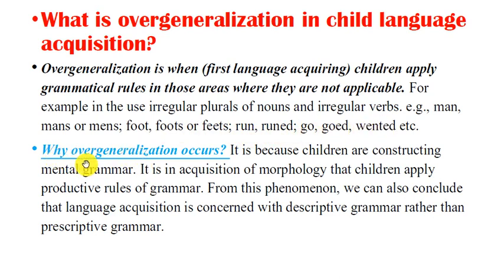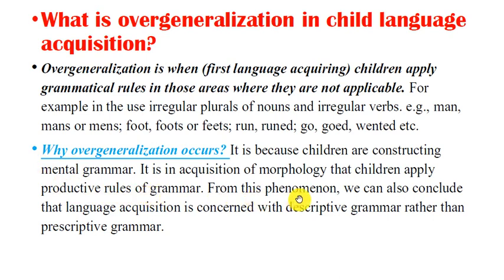Why does overgeneralization occur? It is because children are constructing mental grammar. In the acquisition of morphology, children apply productive rules of grammar. From this phenomenon we can also conclude that child language acquisition is concerned with descriptive grammar rather than prescriptive grammar.